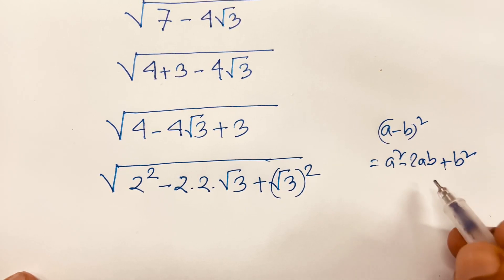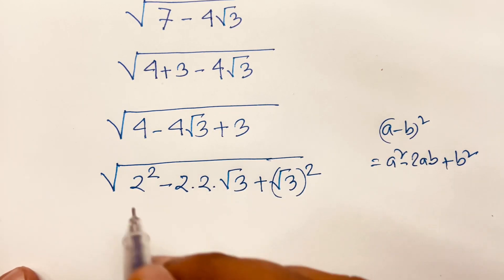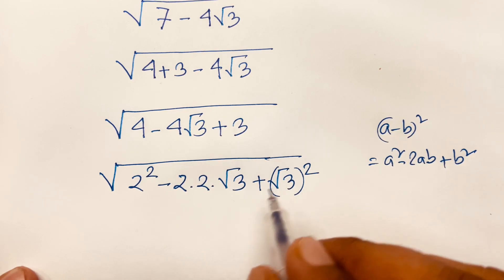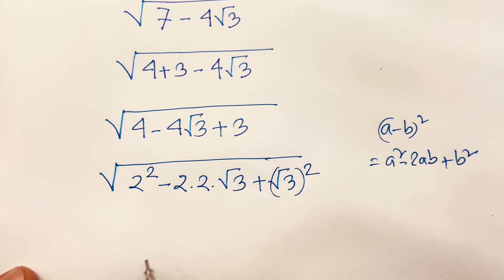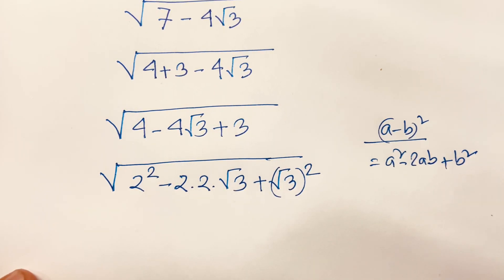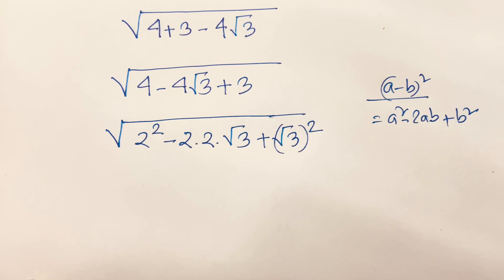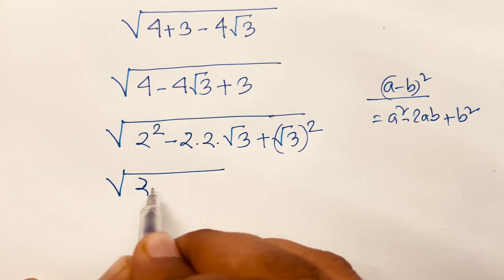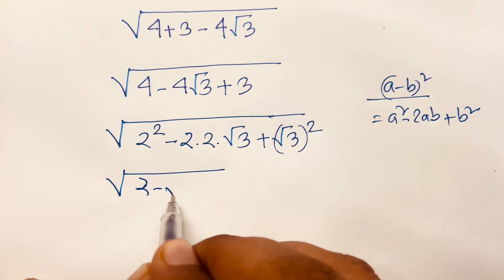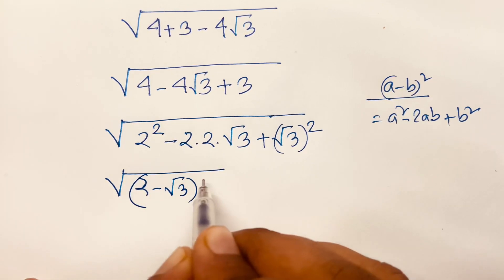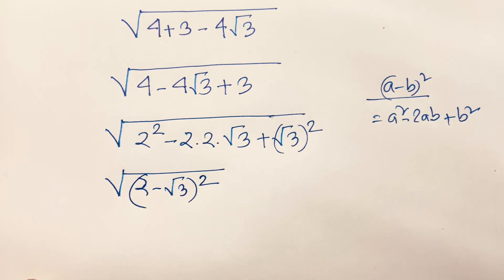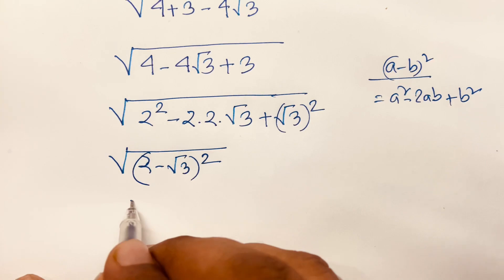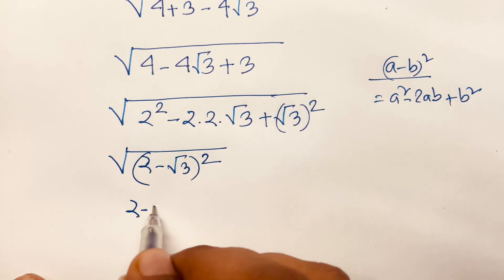According to the formula (a minus b)², where a is 2 and b is √3, the expression inside becomes (2 minus √3)². The outer square root and the square cancel, giving the final answer: 2 minus √3.